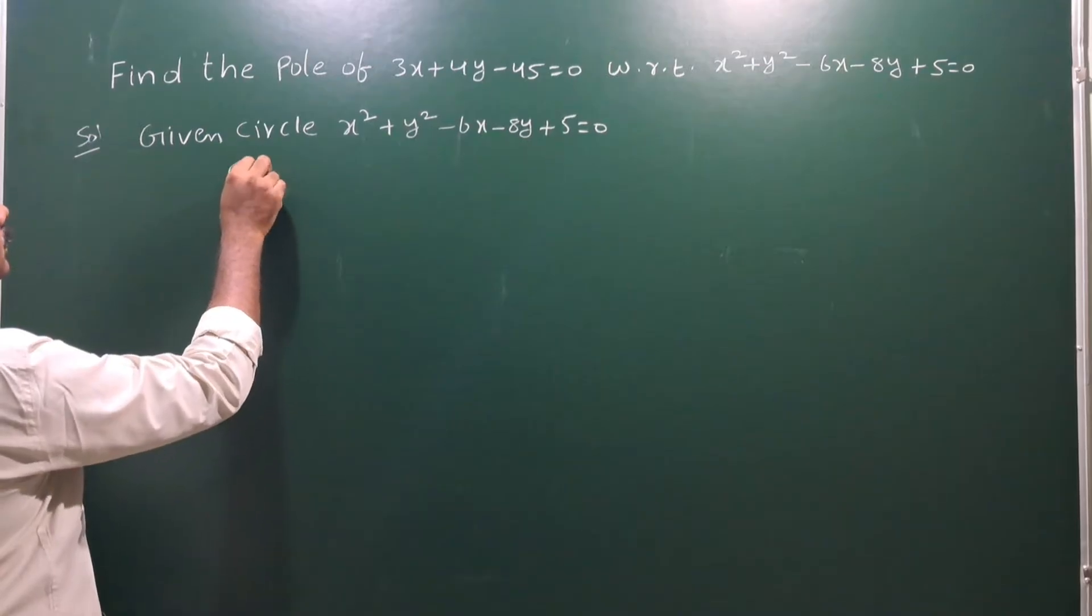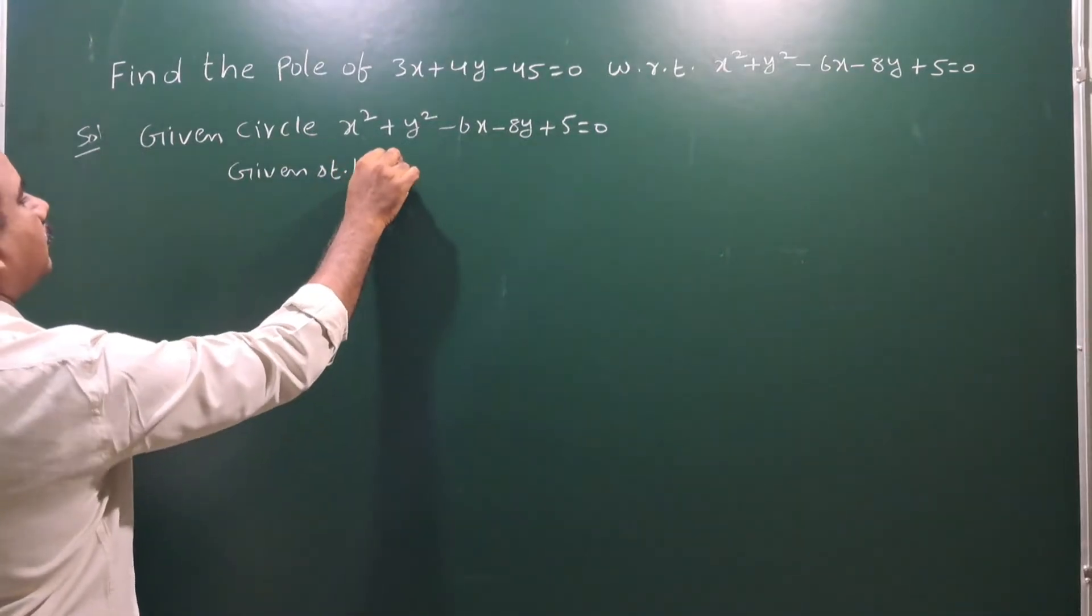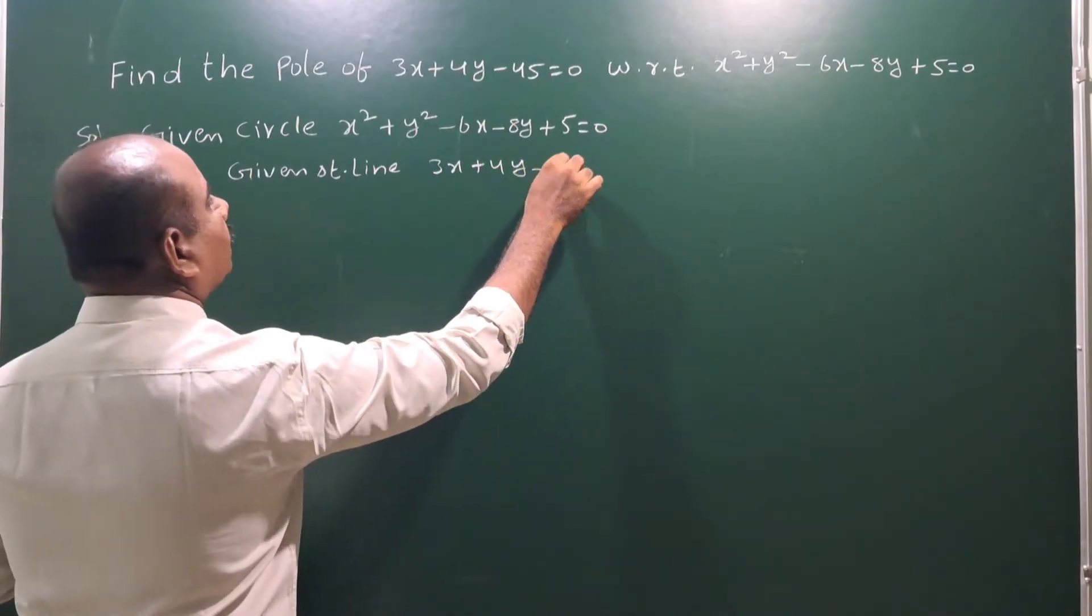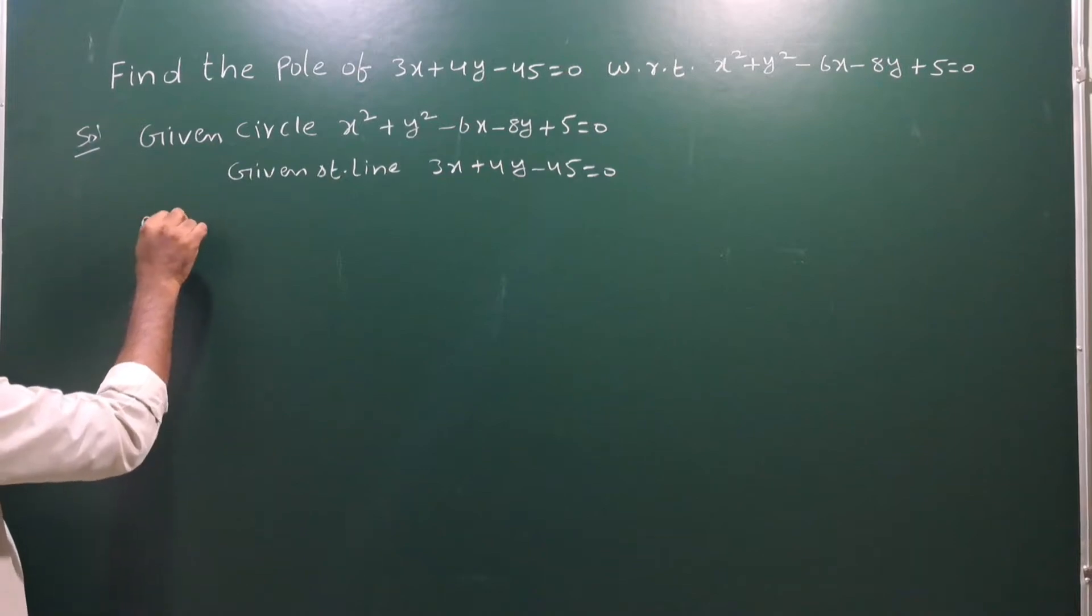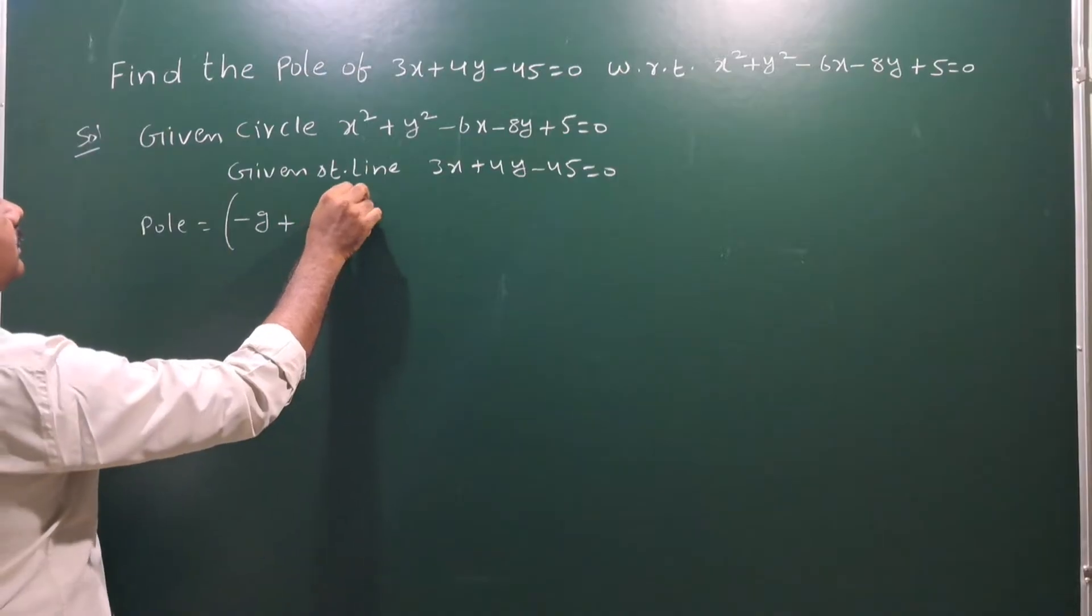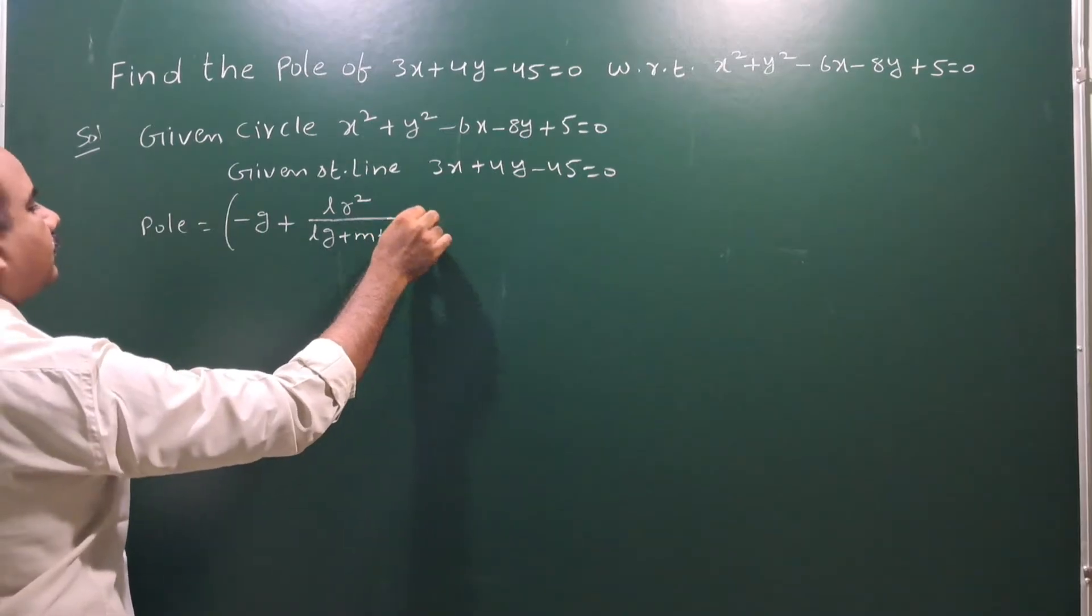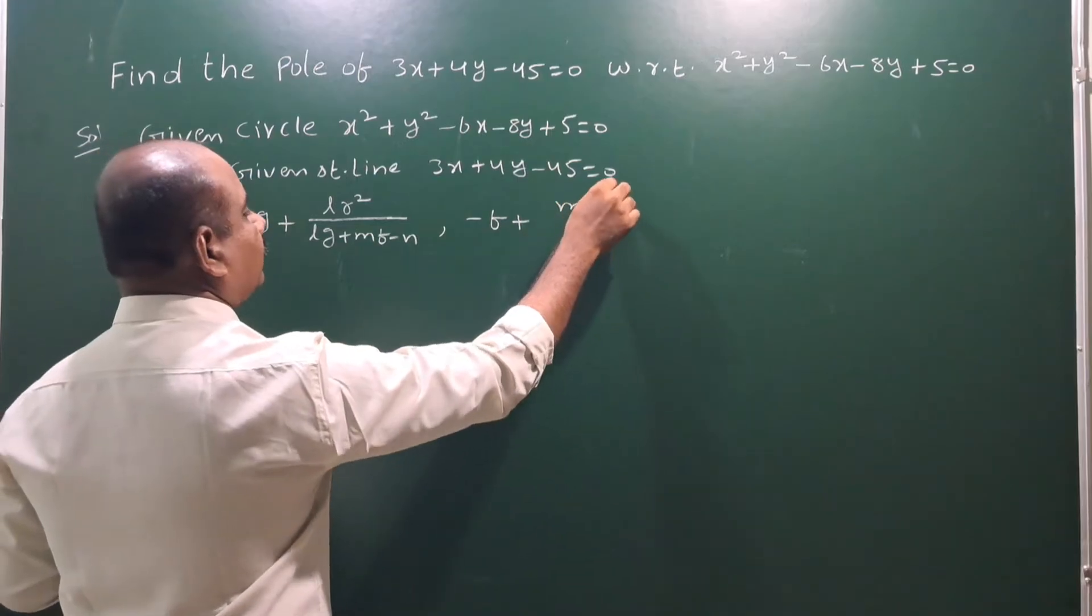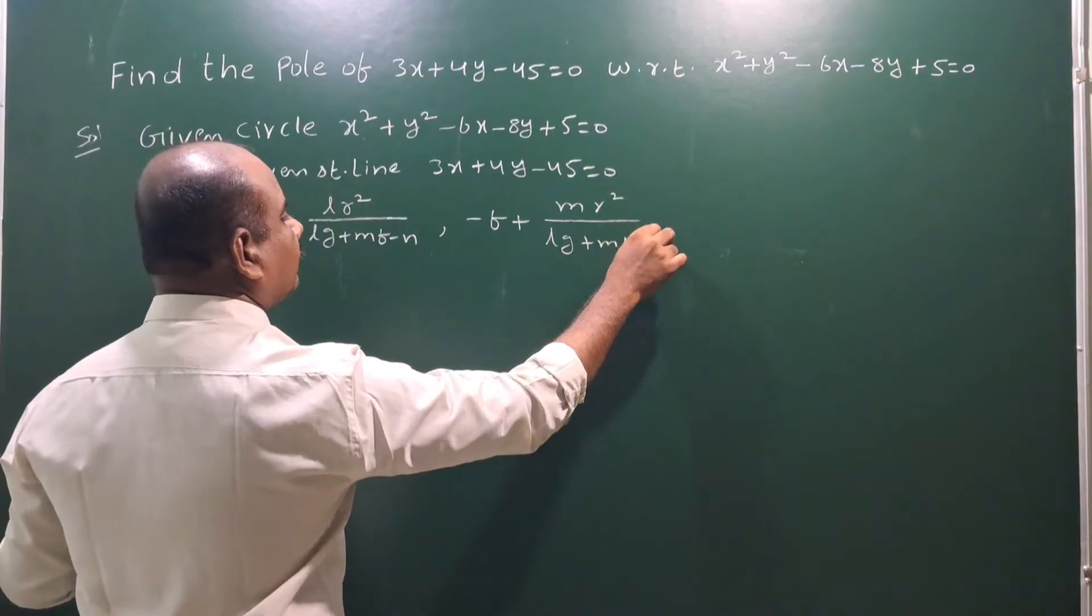So given pole of, let us say given straight line, 3x plus 4y minus 45 equals 0. So pole formula which is equal to minus g plus lr squared by lg plus mf minus n, comma, minus f plus mr squared by lg plus mf minus n.